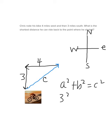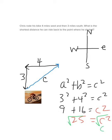Three squared plus four squared equals C squared. Nine plus sixteen equals C squared. Nine plus sixteen is twenty-five. So twenty-five equals C squared. Take the square root of each side and we get C is equal to five. So that's the distance that Chris needs to ride along this blue line, the hypotenuse, to get back to the place where he started.